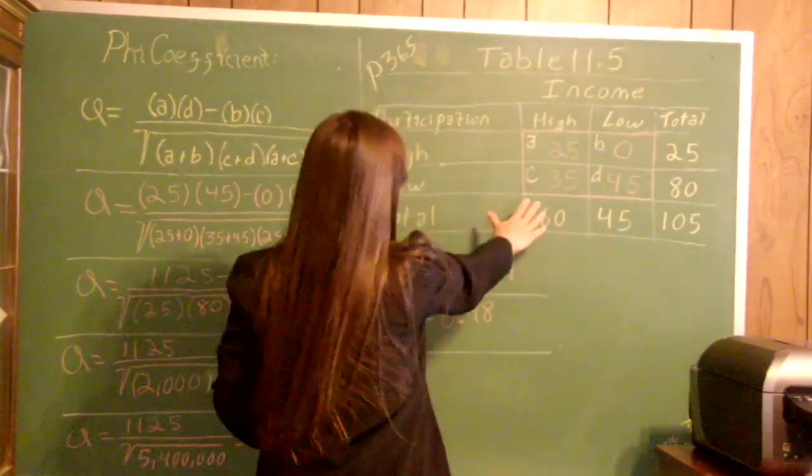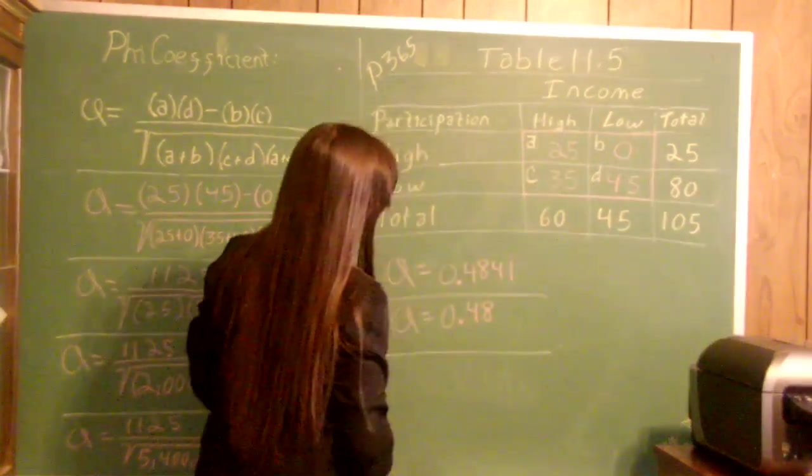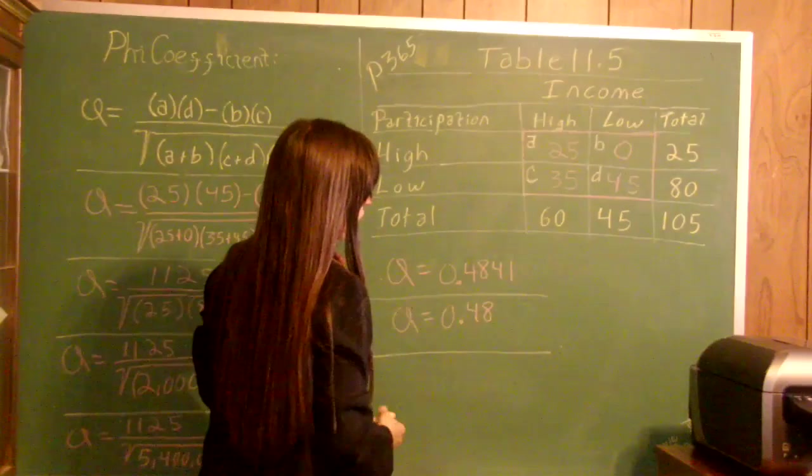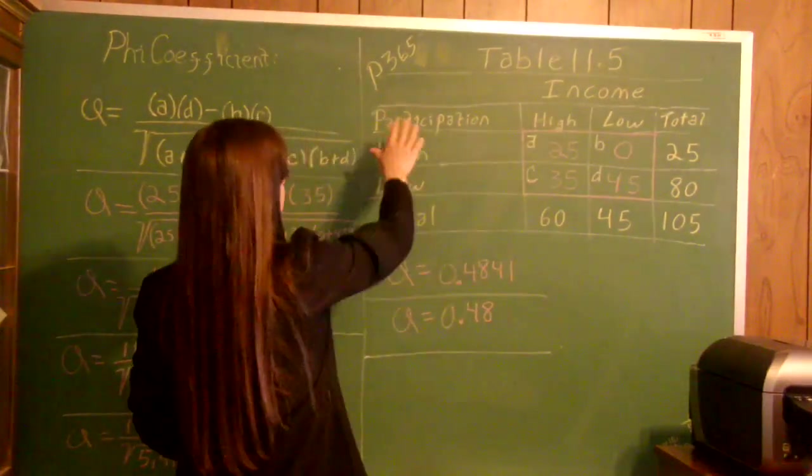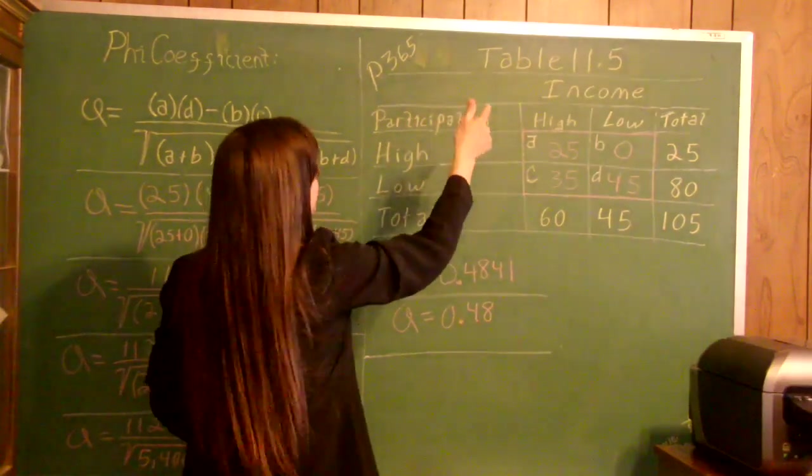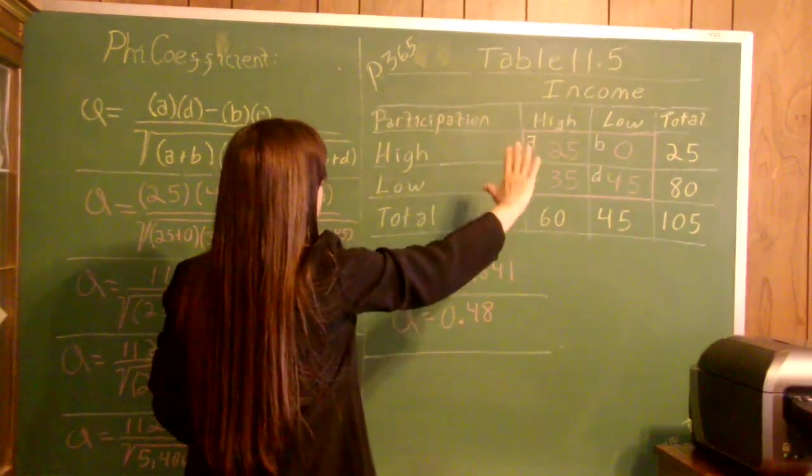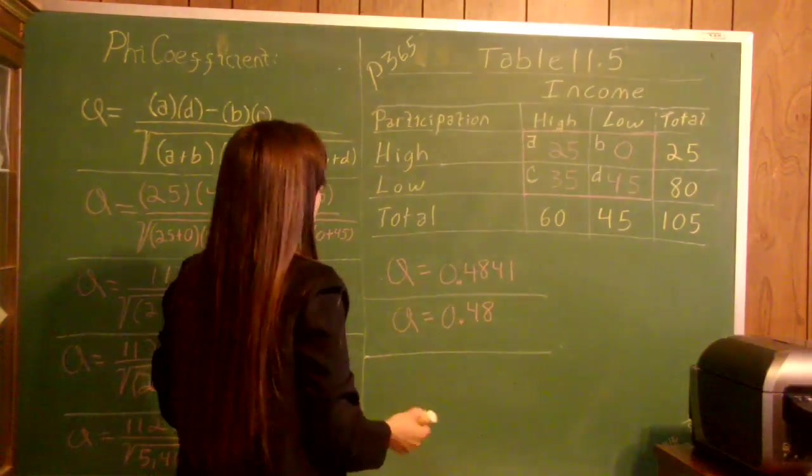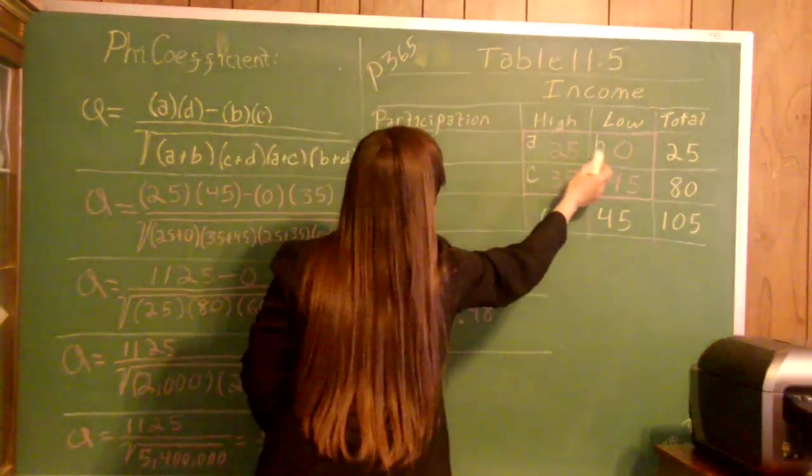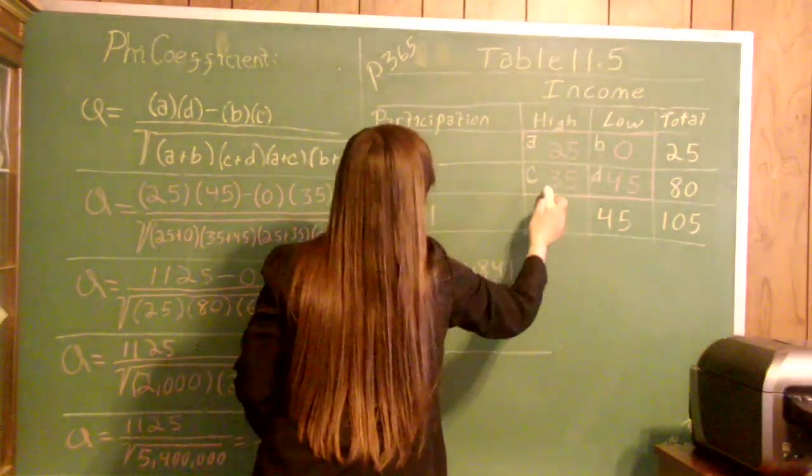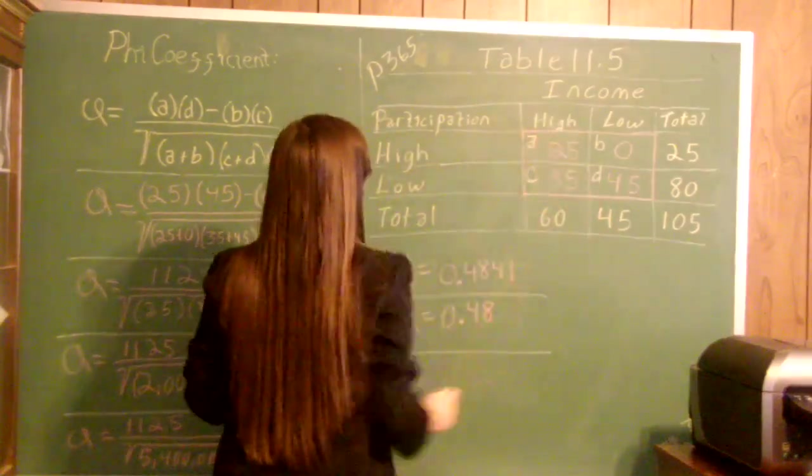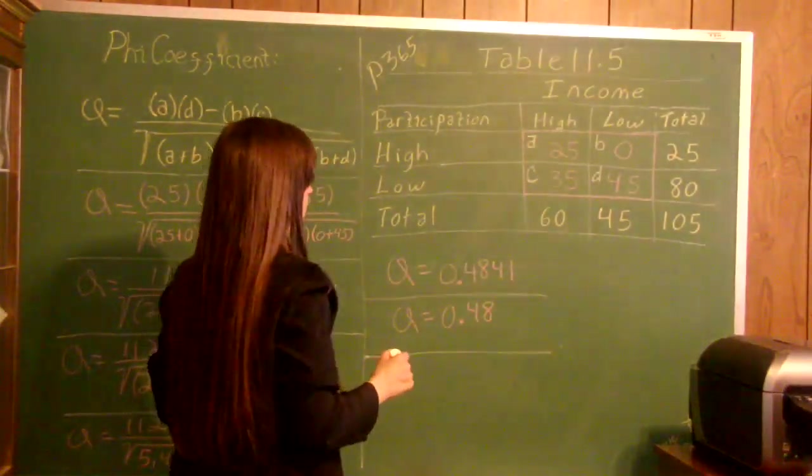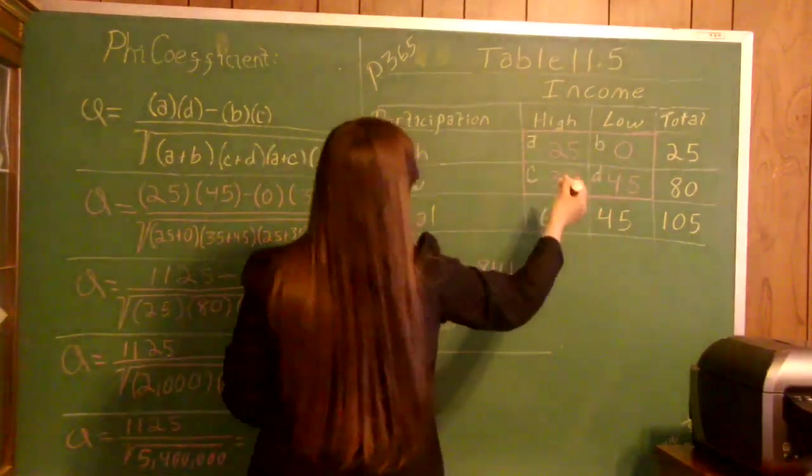The data here is the same as in the previous video when we figured out Yuly's Q. Turn to page 365 of your Sorkin textbook, table 11.5. I have it labeled where A is 25, B is 0, C is 35, and D is 45, so you can see where the numbers are clearly in this 2 by 2 table.